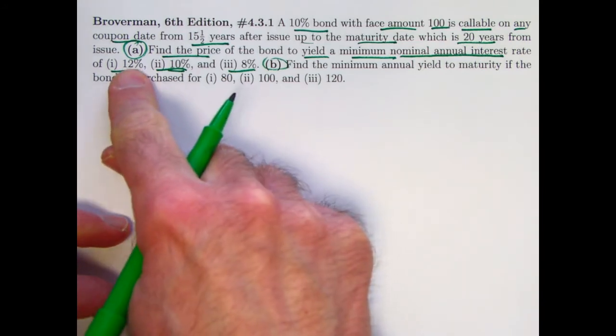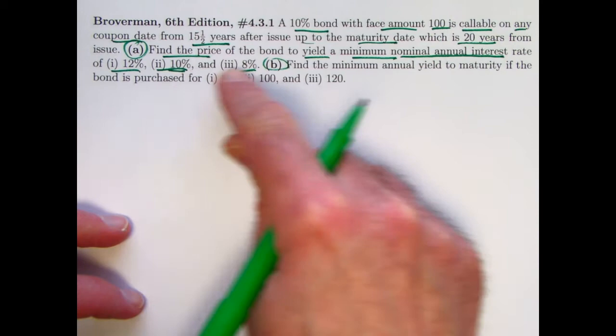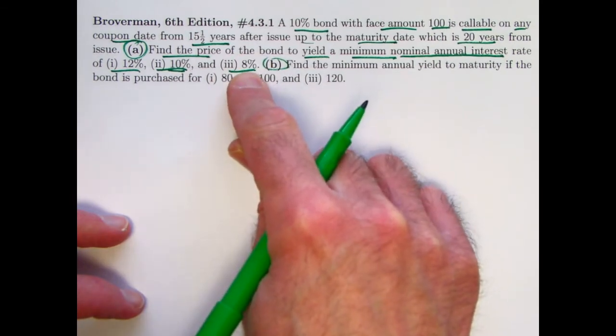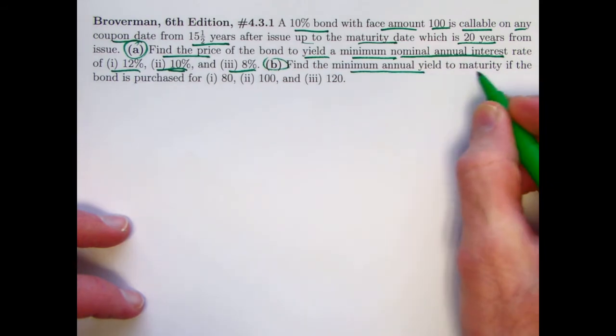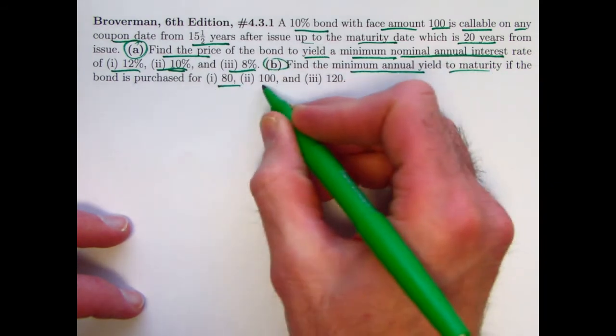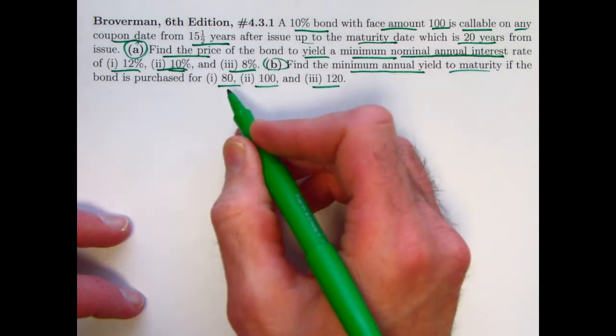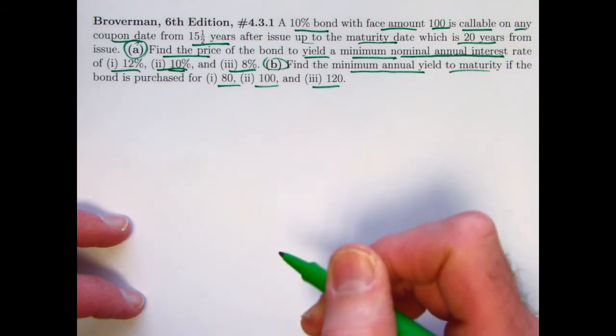So you're getting more than just the interest that you are owed every coupon period, and the balance goes down to the 100 here at the end. 10% would be where you buy the bond at the same price as the value right after any coupon, which is also the same as the face amount, which is the redemption value here. On the other hand, in part B, we're going to be finding the minimum annual yield to maturity when you have these different purchase prices, $80, $100, and $120.